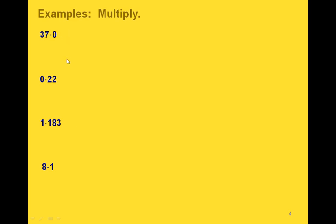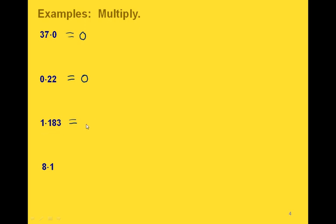Let's do some examples using those two properties. If we have 37 times 0, since we're multiplying by 0, that gives us 0. If we have 0 times 22, we're using that same multiplication property of 0, so that gives us 0. In this one, we have 1 times 183. The multiplication property of 1 says that if we multiply a number times 1, we get that same number back, so this gives us 183.